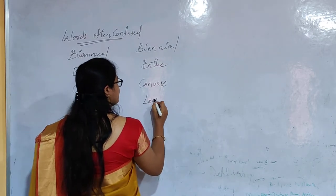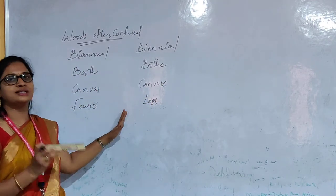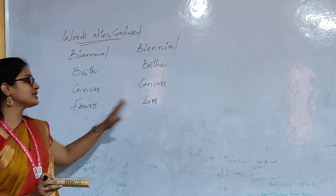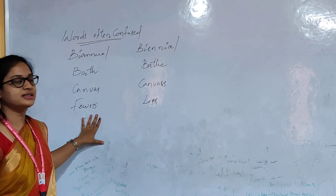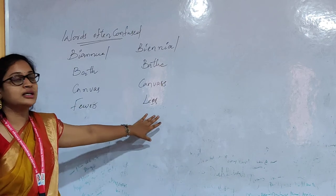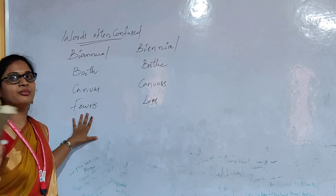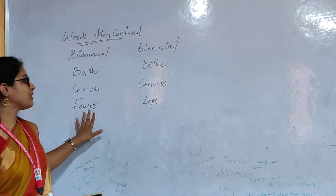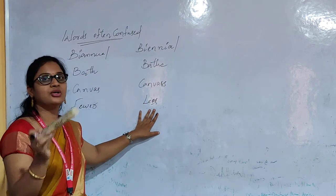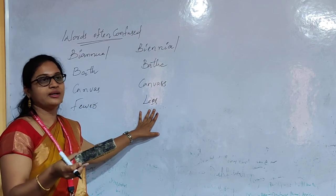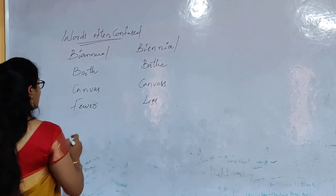The next word is 'fewer' and 'less'. Both give the same meaning — that is, less in quantity. Whenever you are using countable things, you have to use 'fewer' — fewer chairs, fewer benches. Whenever you are using uncountable things, you have to use 'less' — less sugar, less water, less powder. Countable uses 'fewer', uncountable uses 'less'.